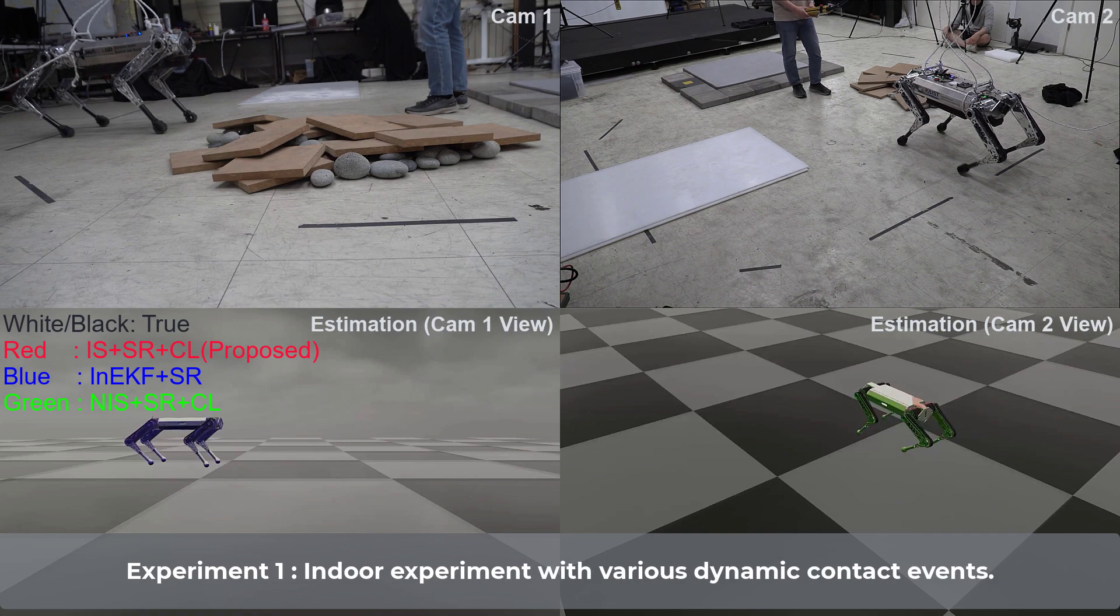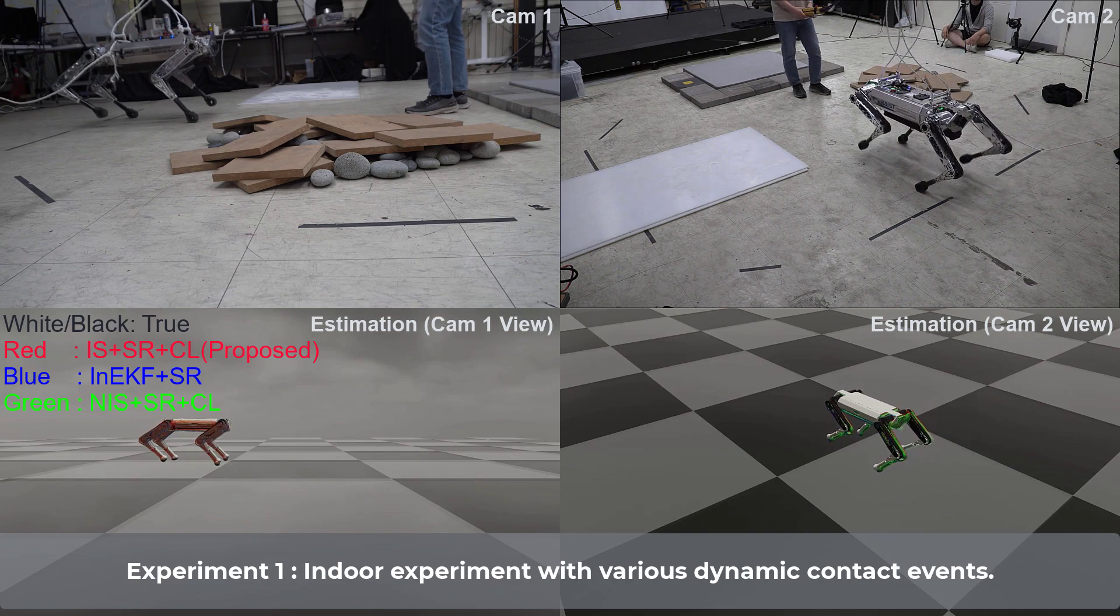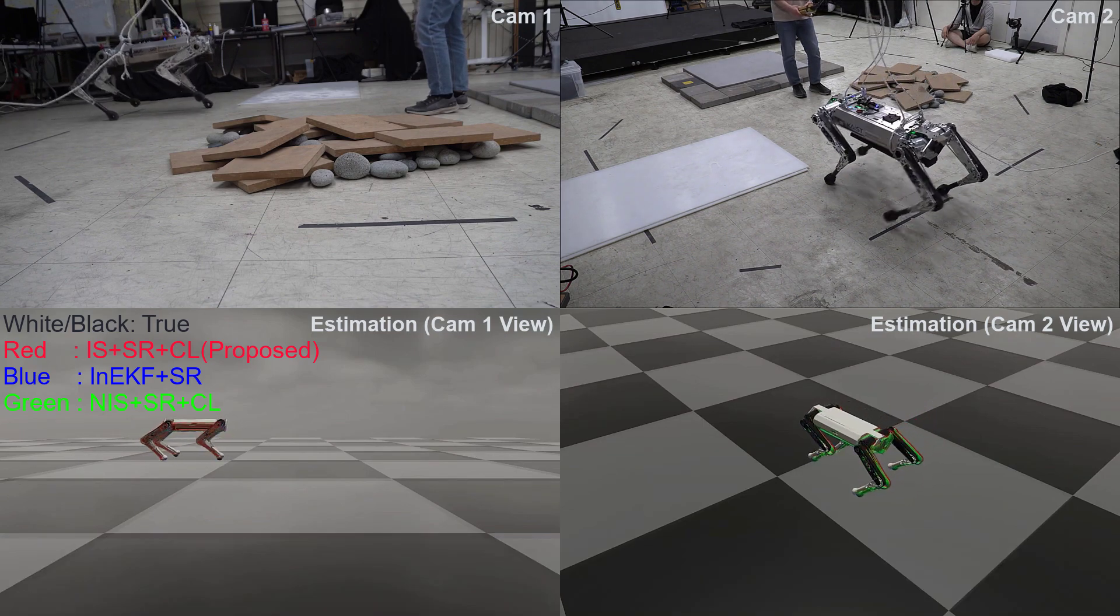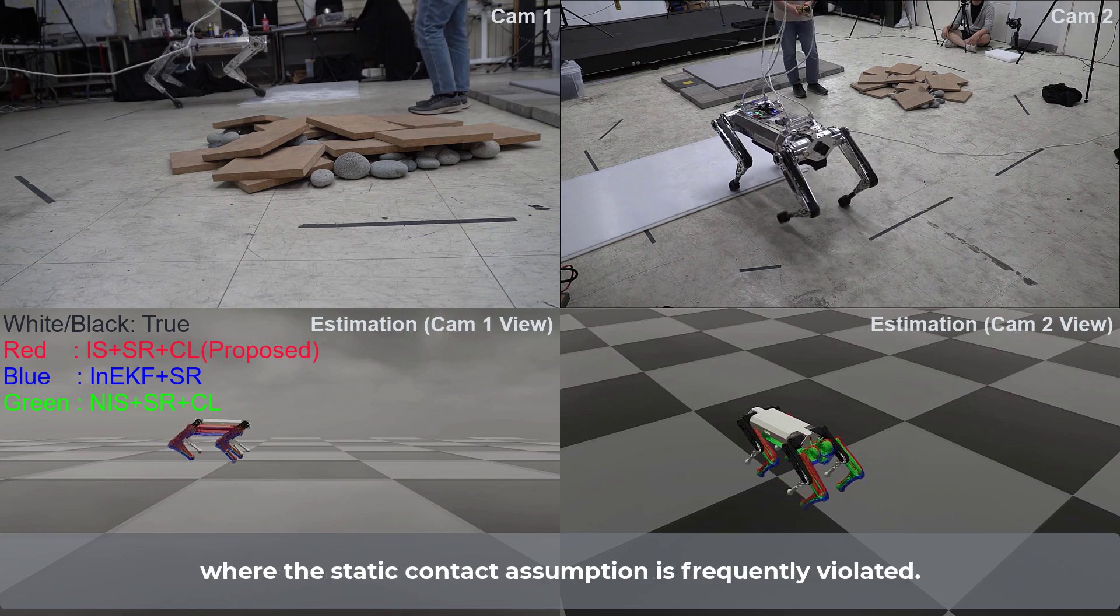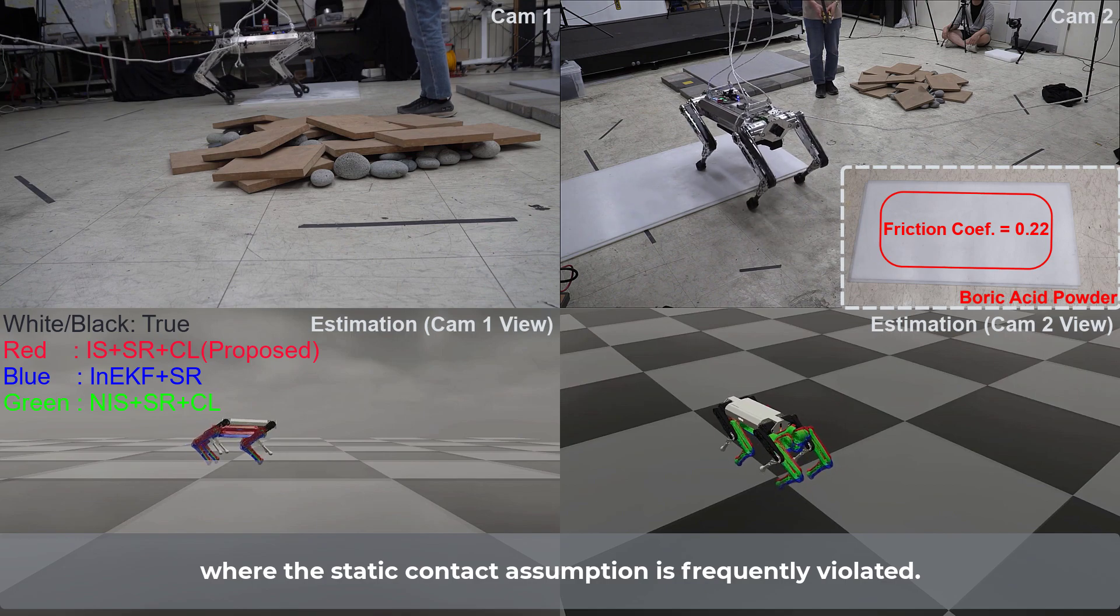Experiment 1. Indoor experiment with various dynamic contact events. In this experiment, the robot walks in an extreme environment where the static contact assumption is frequently violated.